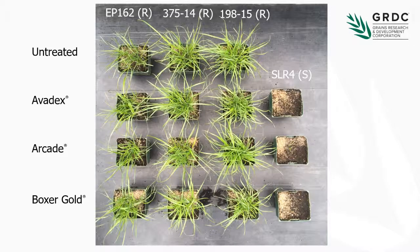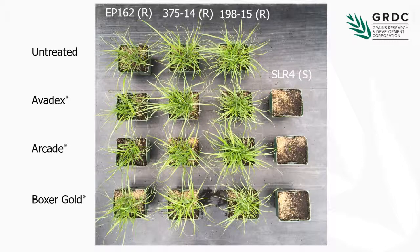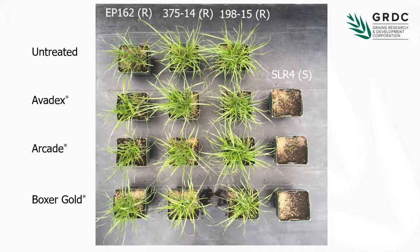I just thought I'd start with this — it's a good illustration of what we're dealing with here. Across the top I've got three populations: two are from the York Peninsula from the South Australian region, one from New South Wales, and then here on the right we've got the susceptible. These are all full label rates of the group J herbicides and the untreated. You can see that neither of these herbicides have provided any level of control other than in the case of the susceptible.